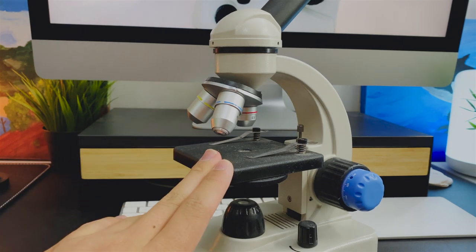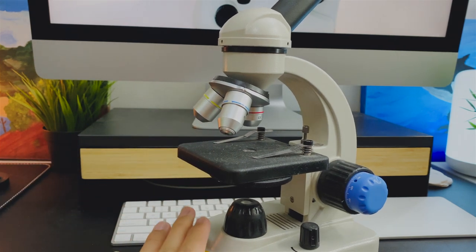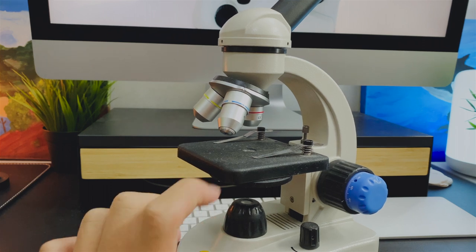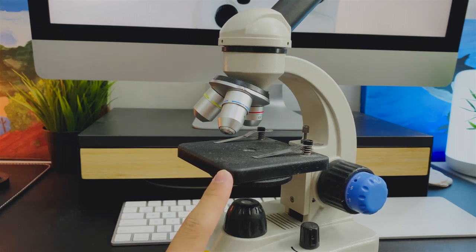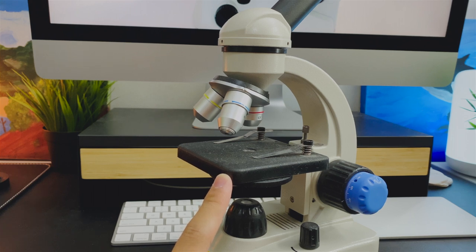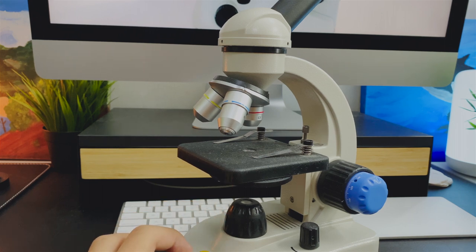One of the features that's missing from cheaper microscopes like the Swift is the mechanical stage. Mechanical stages are used to adjust the position of your slide. Without it, you need to use your fingers to do that and it's not as accurate.